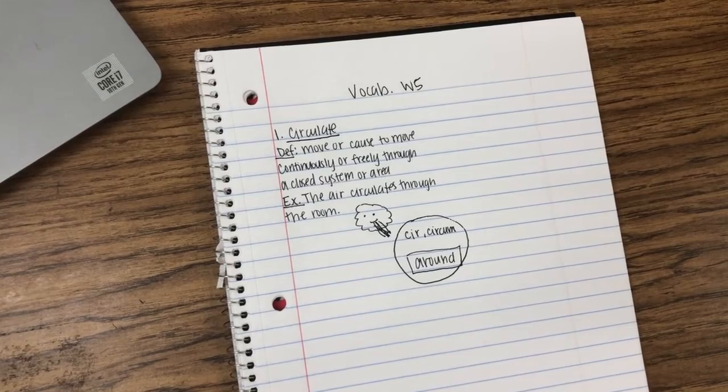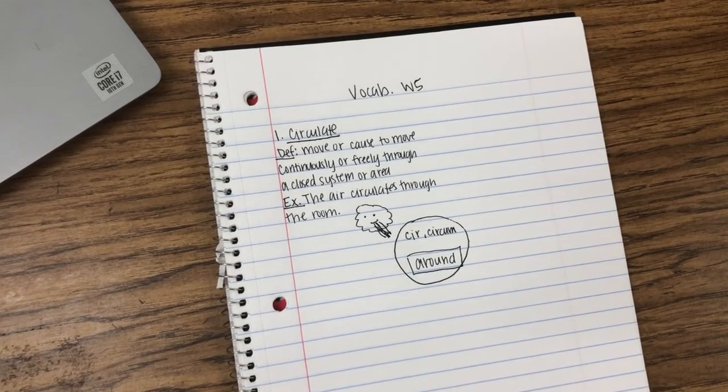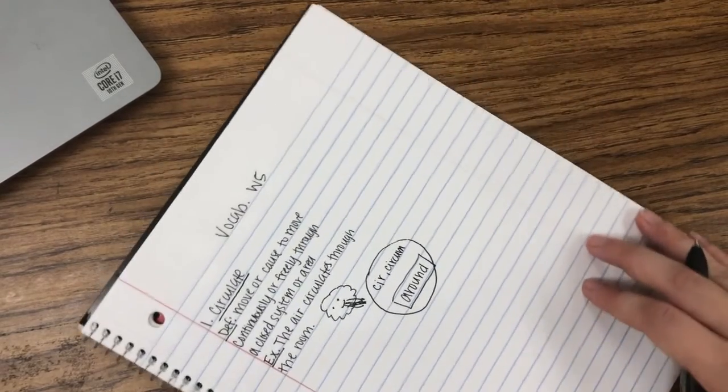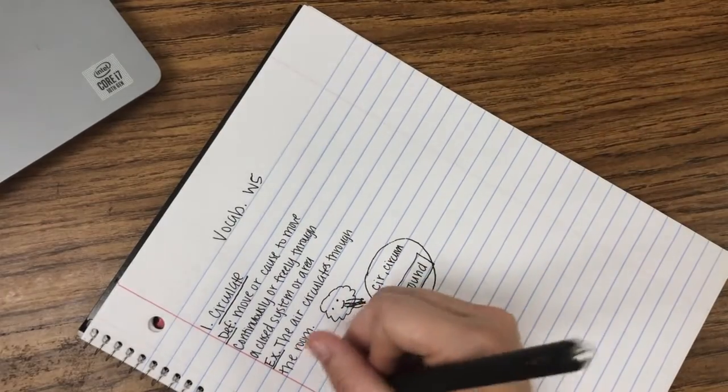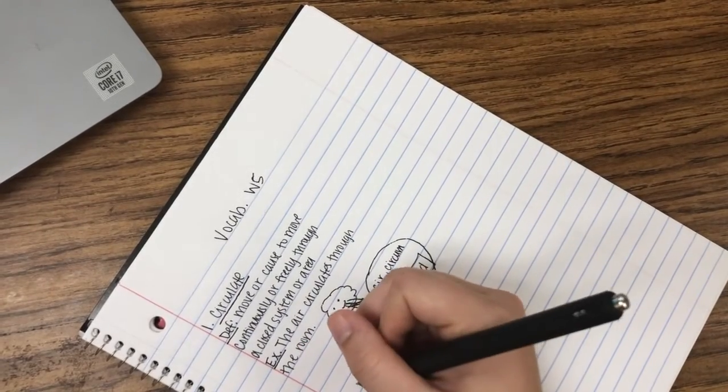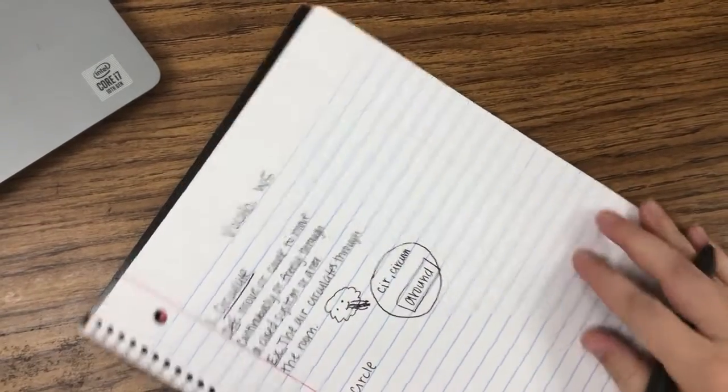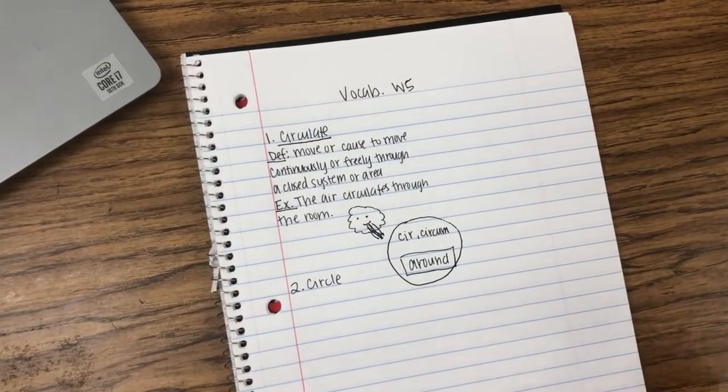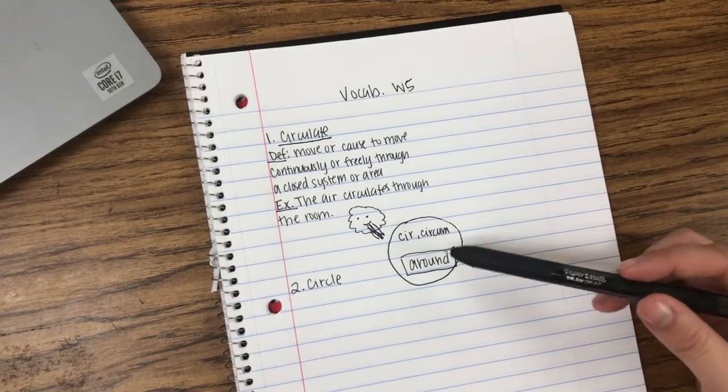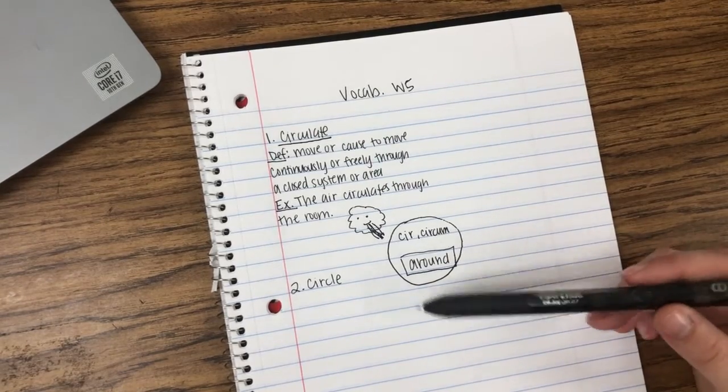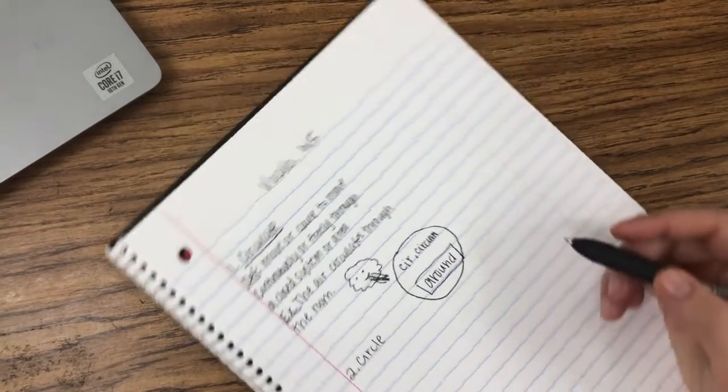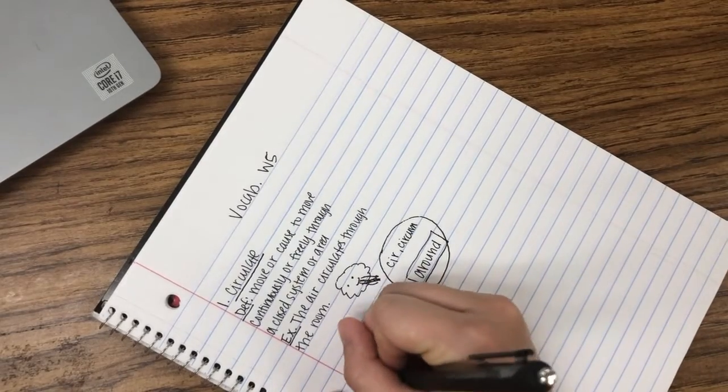Okay guys, let's move on to number two, which is one we should all know: circle. But the reason we're doing this word is because I bet you didn't know that cir means around, so circle means a figure that goes all around.